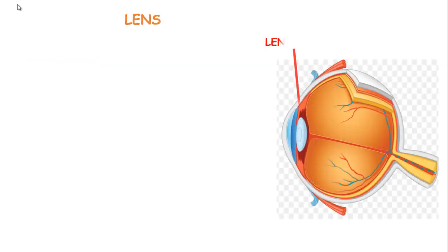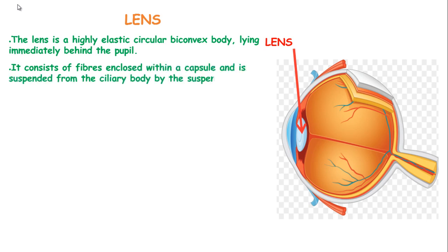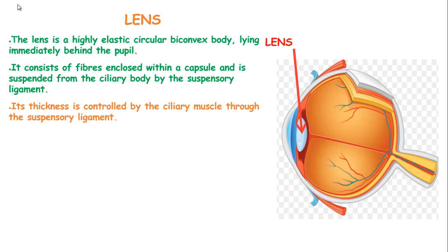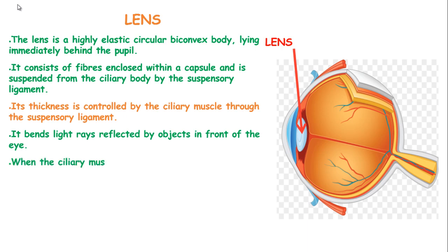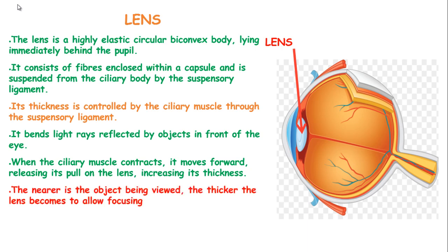The lens is a highly elastic circular biconvex body lying immediately behind the pupil. It consists of fibers enclosed within a capsule and is suspended from the ciliary body by the suspensory ligament. Its thickness is controlled by the ciliary muscle through the suspensory ligament. The lens bends the light rays reflected by objects in front of the eye. When the ciliary muscle contracts, it moves forward, releasing its pull on the lens and increasing its thickness. The nearer the object being viewed, the thicker the lens becomes to allow focusing.